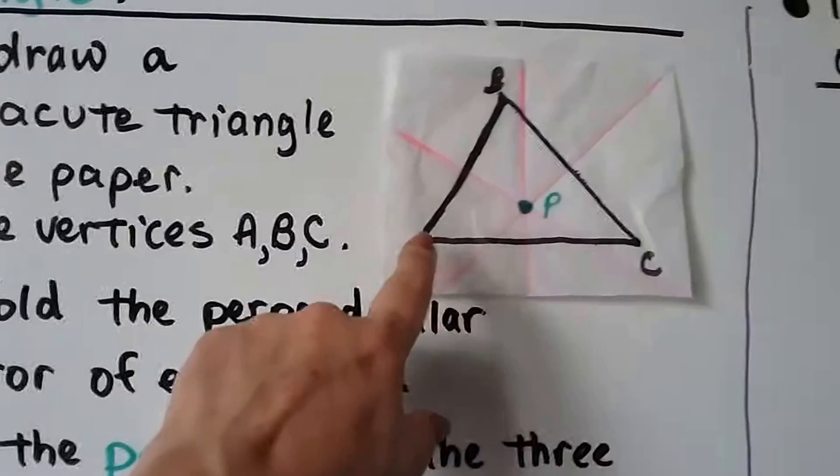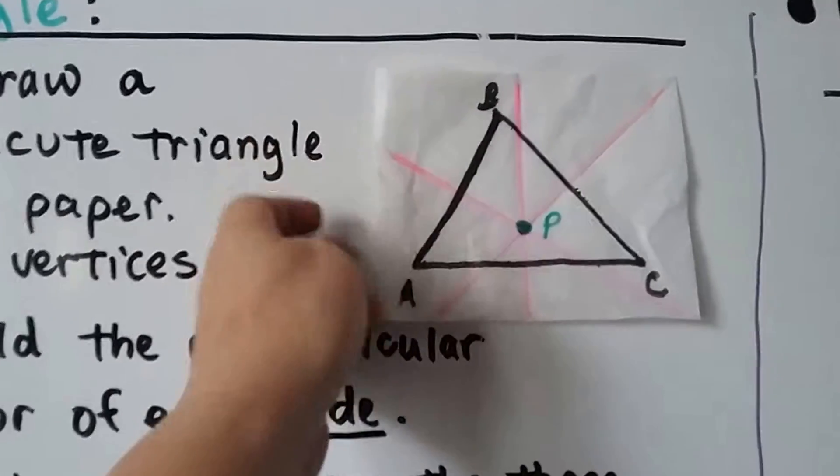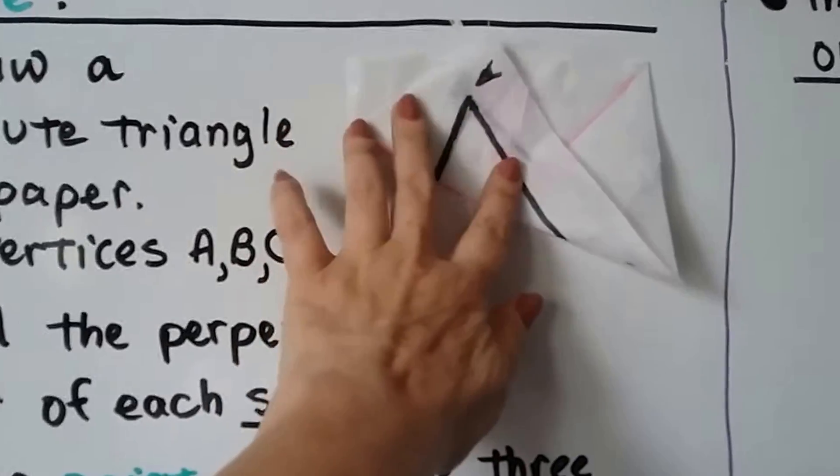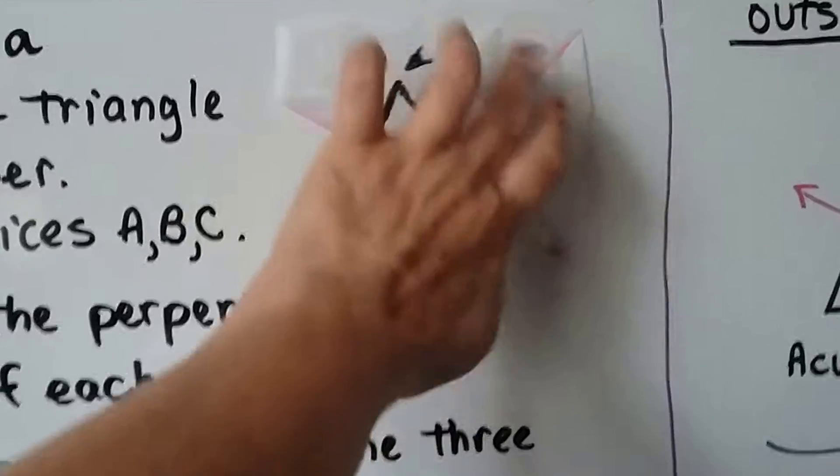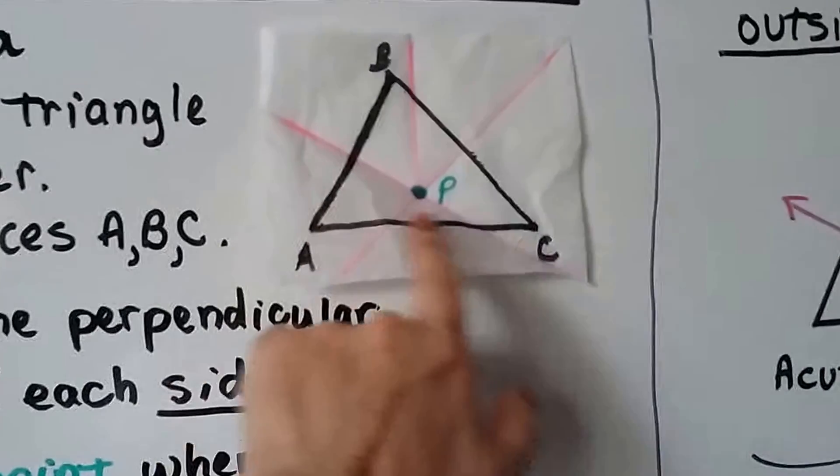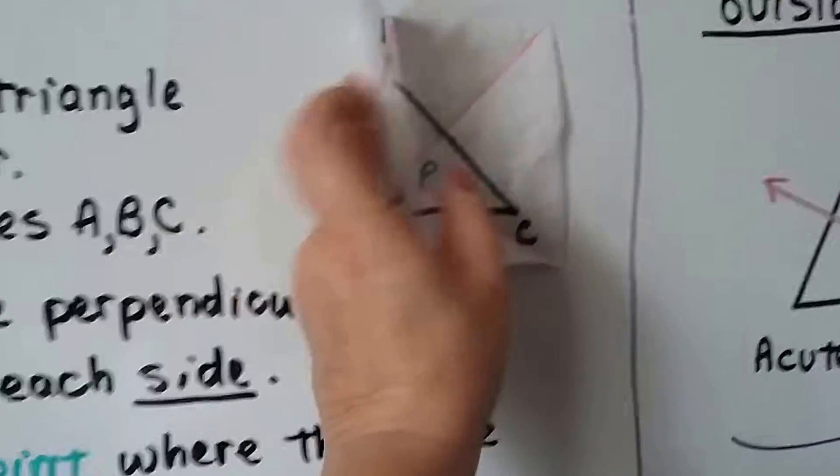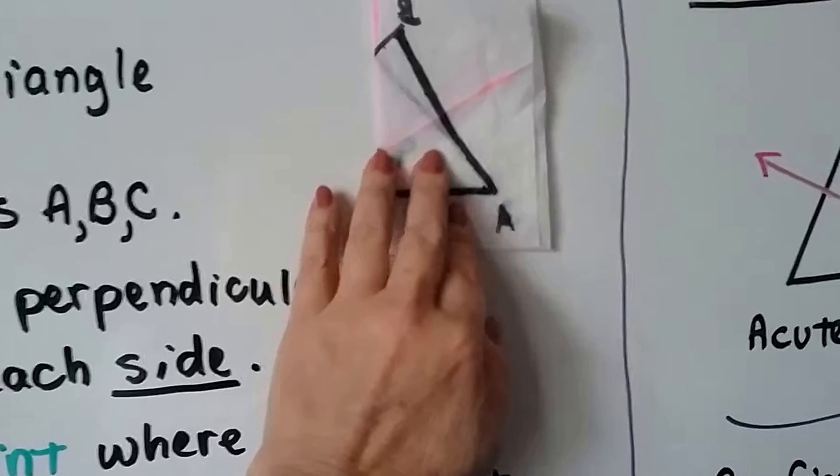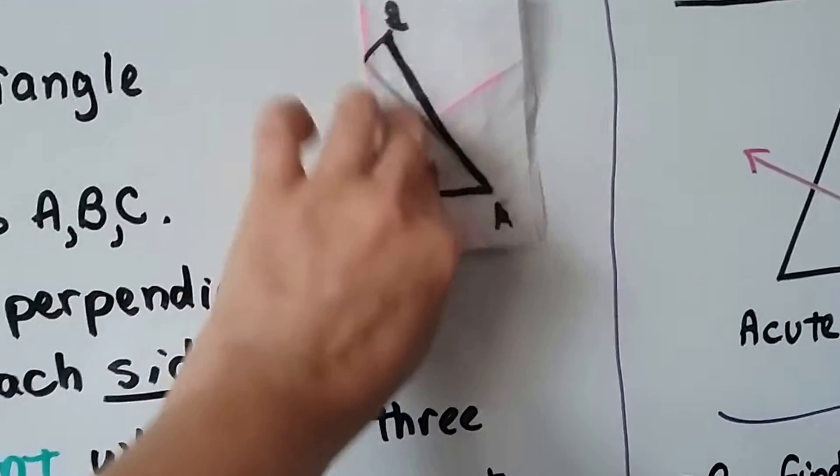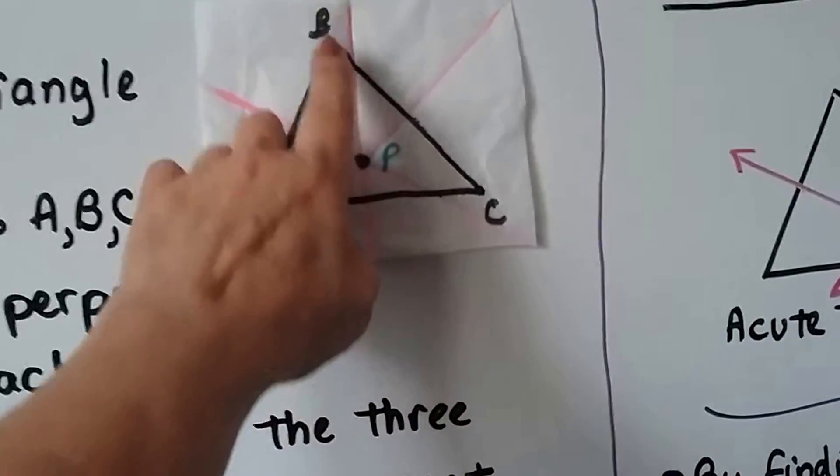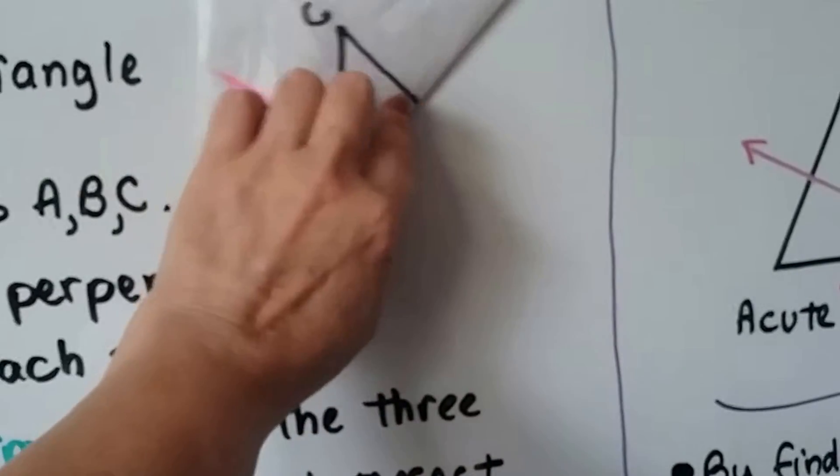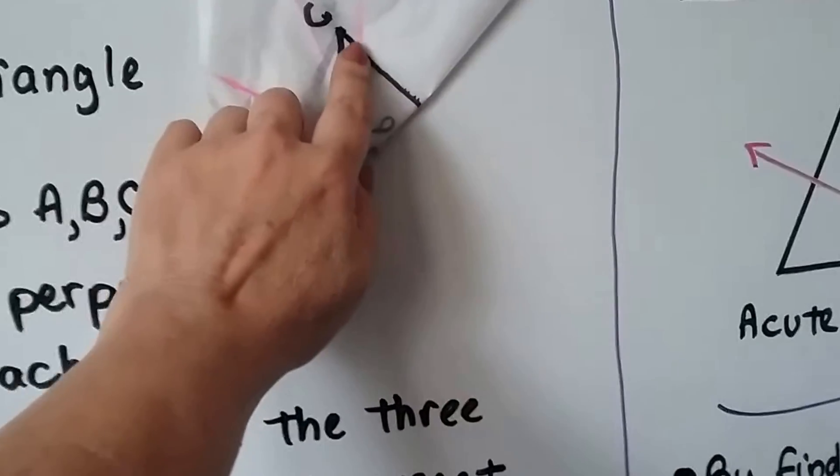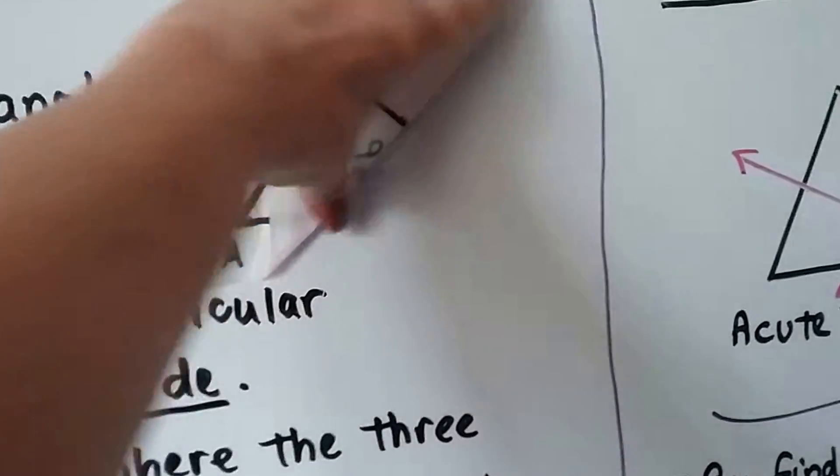What we do is, we take this vertex A and fold it onto B so they match perfectly. And we make a nice fold here. And we can take A and fold it onto C so it matches. Put a nice fold. And we can fold B onto C so one vertex is on top of the other. We put a nice fold.